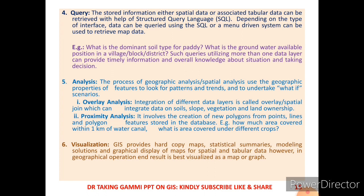Such queries utilizing more than one data layer can provide timely information and knowledge for decision-making. Number five is analysis — the focus of geographic analysis is spatial analysis, used to look for patterns and returns and to undertake 'what-if' scenarios. Two examples: one is overlay analysis — integration of different layers such as soil, slope, vegetation, and land ownership. Number two is proximity analysis — creation of new polygons from point, line, and polygon features, for example: how much area is covered within one kilometer of a water canal.